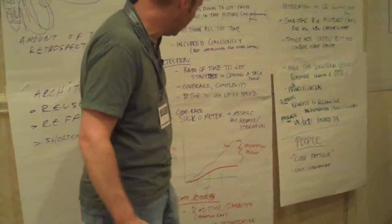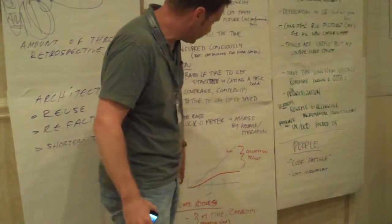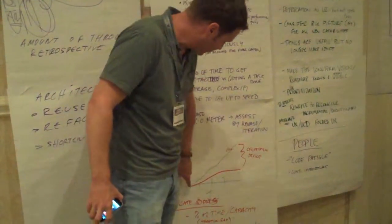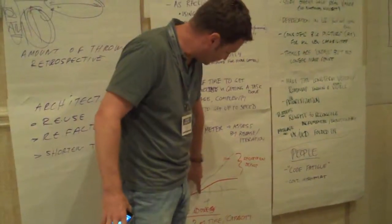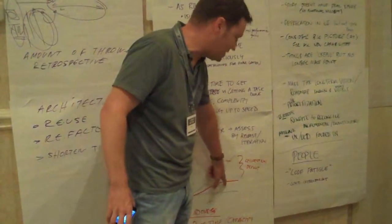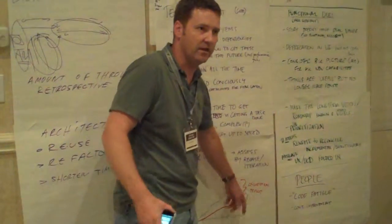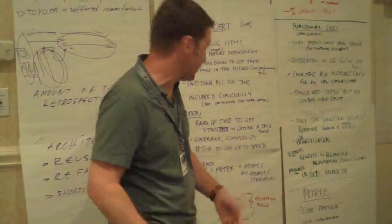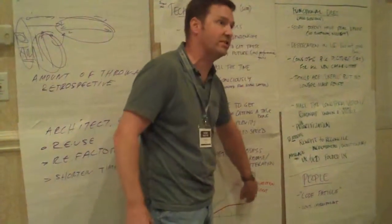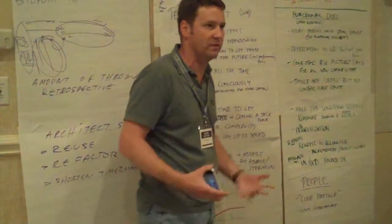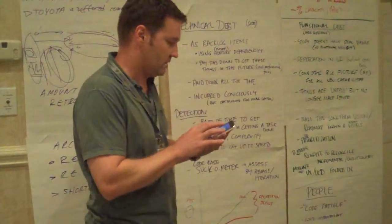Dave got up and talked about how if you're trending some metrics and tracking your delivery in terms of points versus something like unit tests or some other measure of adherence to a good practice, and you see this gap growing, you're building up a regression deficit — which is a pretty interesting way of looking at it. That's all I got.